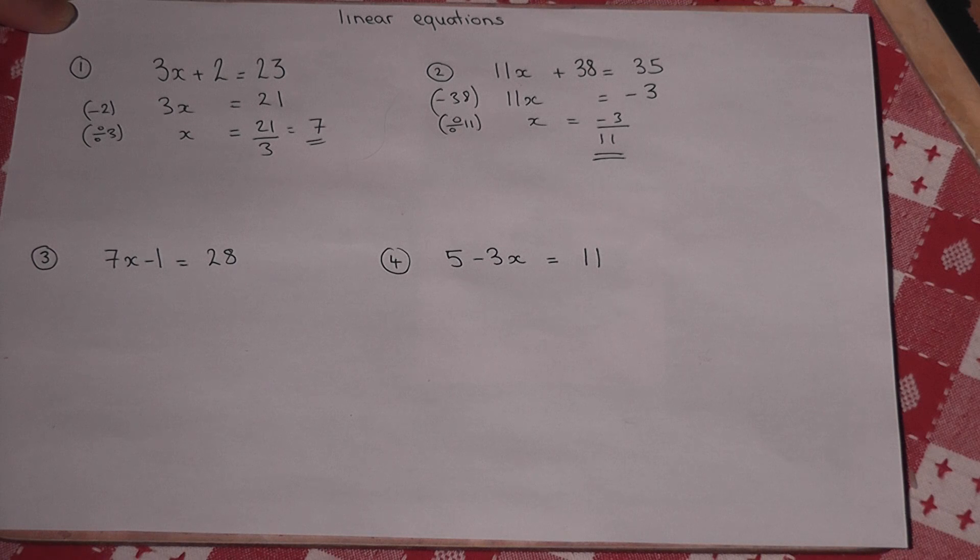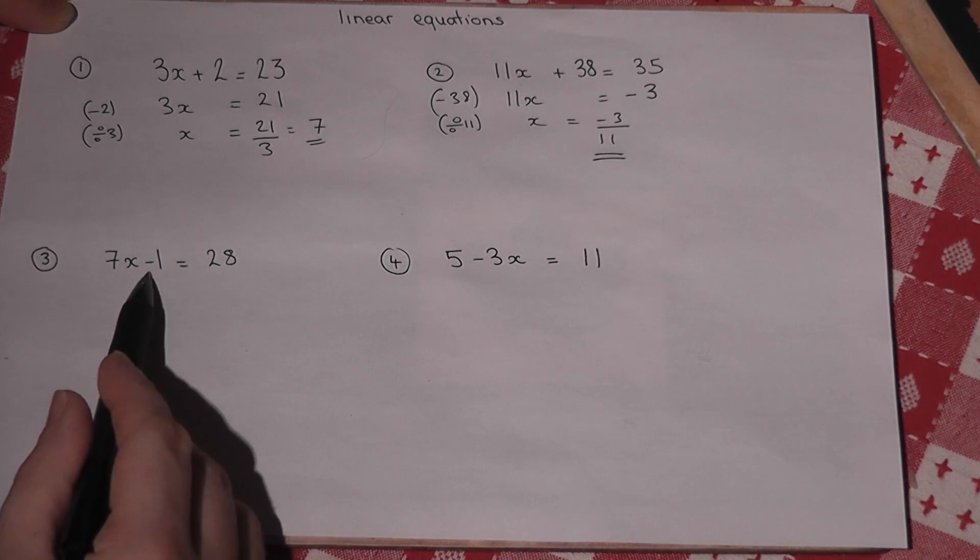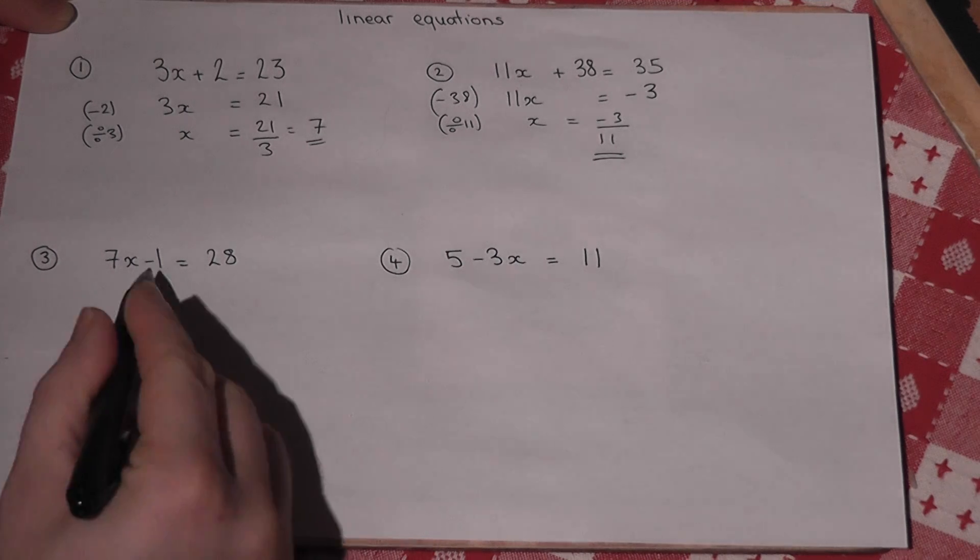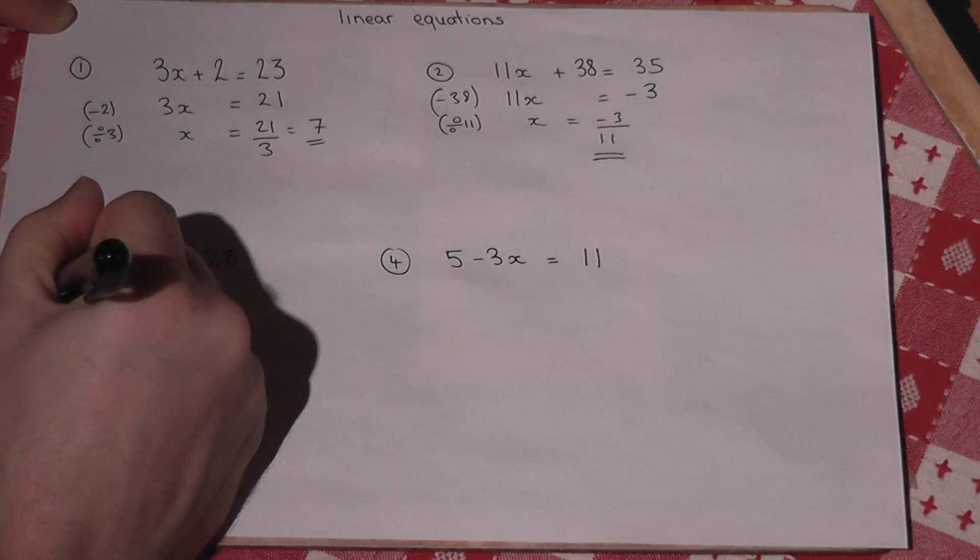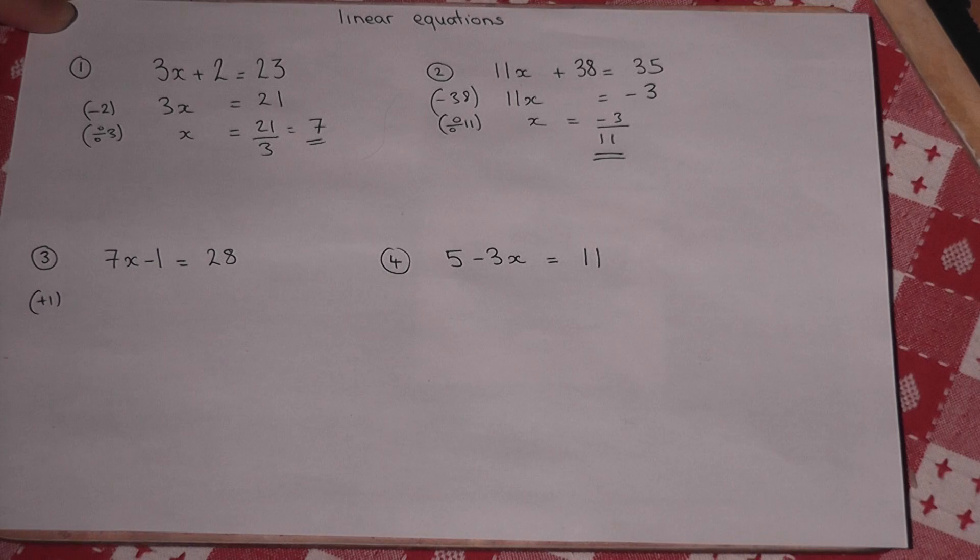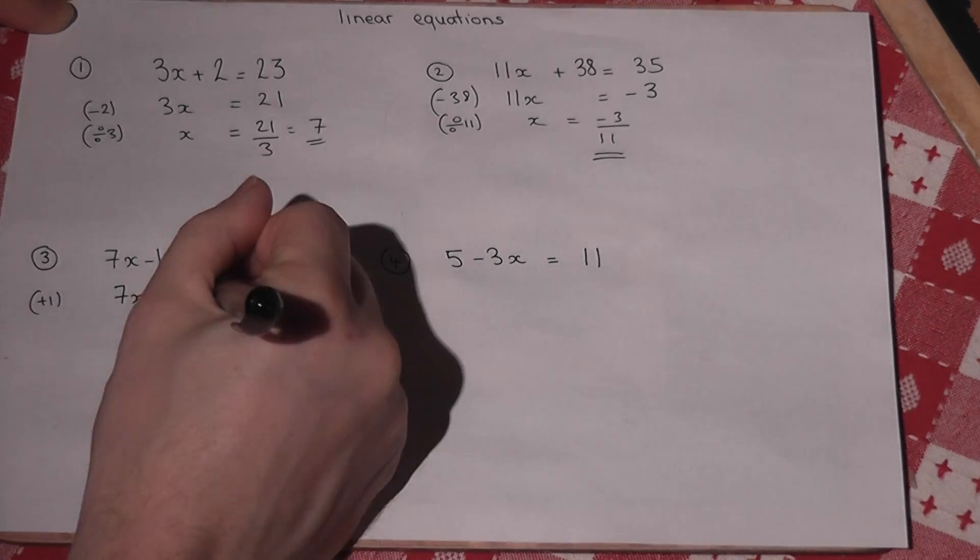So in the third example 7x take away 1 equals 28. There's a minus 1 there so I need to add 1 to both sides. So the left hand side is left with 7x. But on the right hand side I get 29.